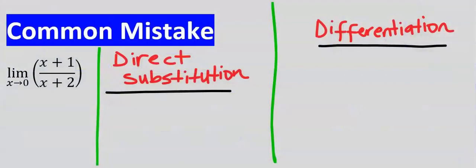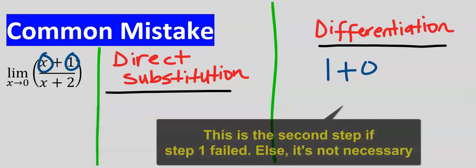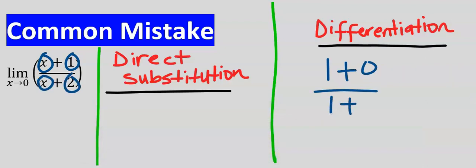One common mistake is for students to leave out direct substitution and just rush into applying L'Hôpital's rule by differentiation. Differentiate this, you're going to get one. Differentiate this, you're going to get zero. Differentiate this, you're going to get one. Differentiate this, you're going to get zero. And you can see that you're just going to get one as your answer.